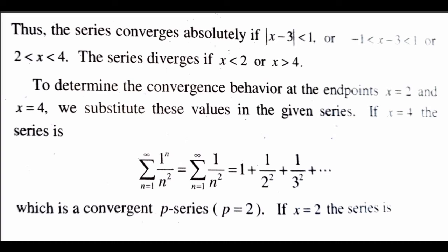To determine the convergence behavior at the end points x equal to 2 and x equal to 4, we substitute these values in the given series. If x equal to 4, then the series is sigma n equal to 1 to infinity 1 raised to n by n square, that is equal to sigma n equal to 1 to infinity 1 by n square, which equals 1 plus 1 by 2 square plus 1 by 3 square plus etc. This is a convergent p-series with p equal to 2.